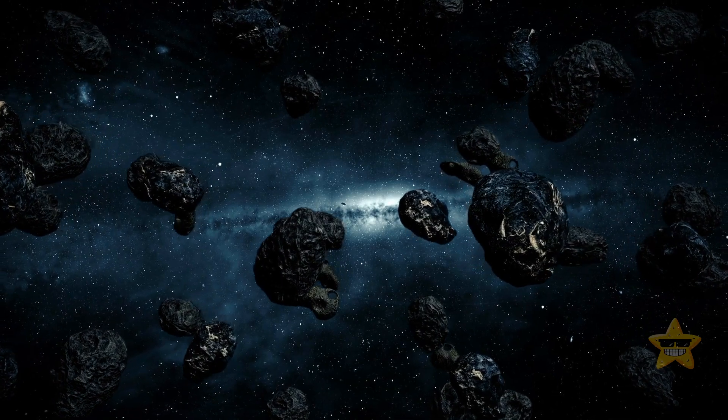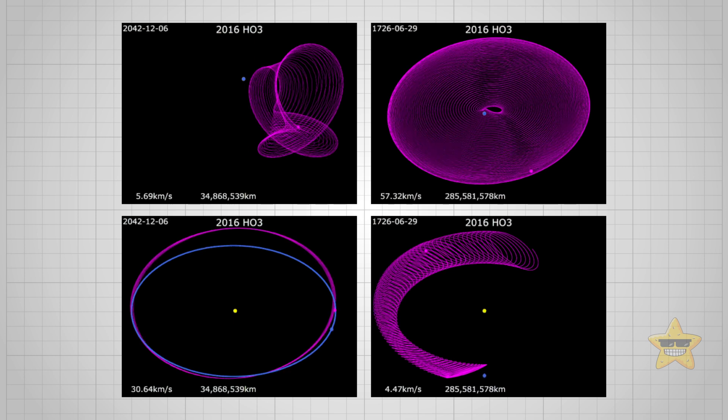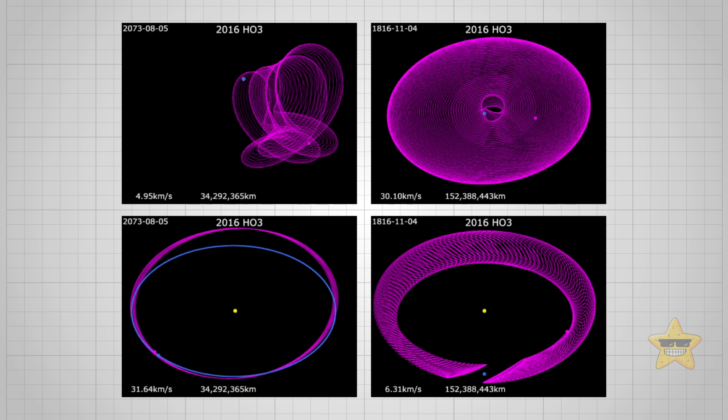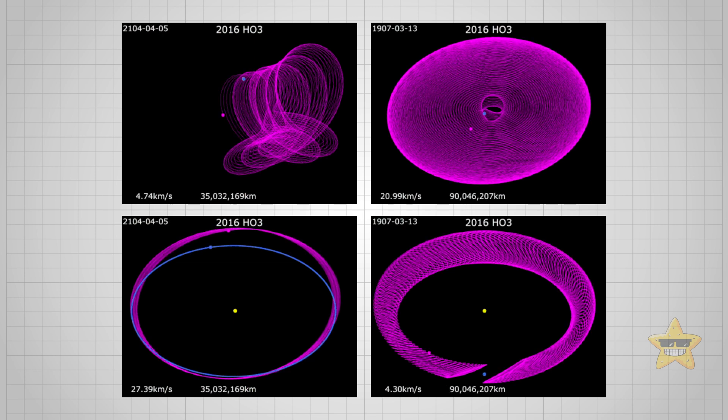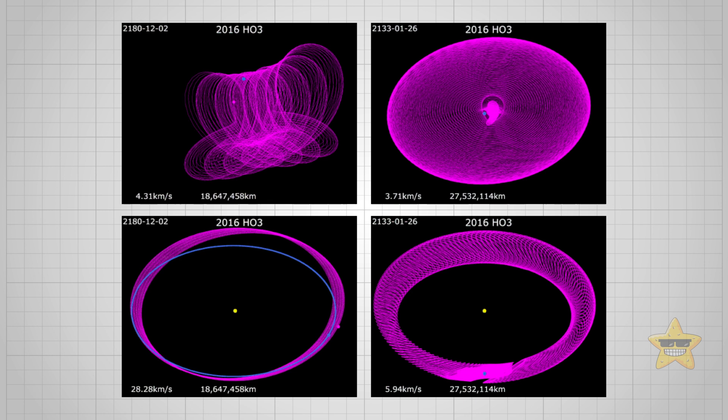Kamo'oalewa is another quasi satellite of our planet. Its orbit is a bit tilted and slightly elongated, so the rock keeps leaping ahead and then falling behind Earth. In other words, it performs constant loops around us.